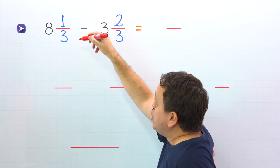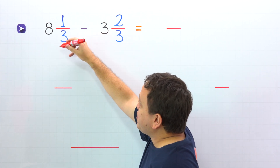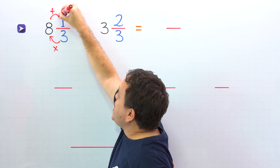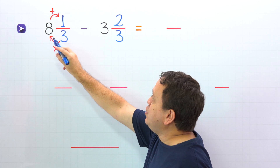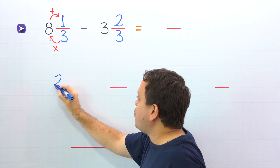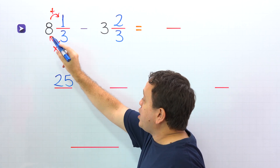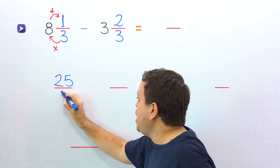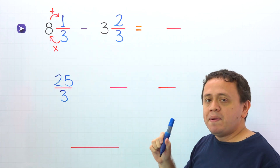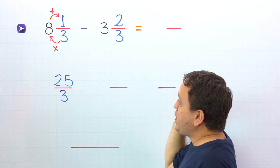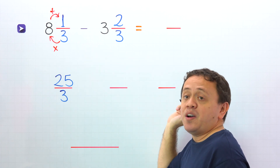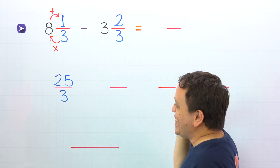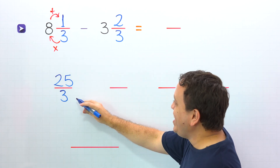Let's start with eight and one-third. To convert a mixed number to an improper fraction, first we multiply the denominator by the whole number and then we add this result to the numerator. Three times eight is 24, plus one gives us 25. Then we keep the denominator the same — three comes over here. We should remember what an improper fraction is: it's a fraction where the numerator, the top number, is greater than or equal to the denominator, the bottom number. Twenty-five thirds is an improper fraction, given that the numerator 25 is greater than the denominator 3.